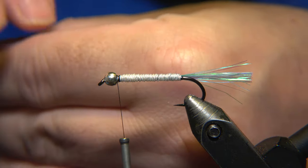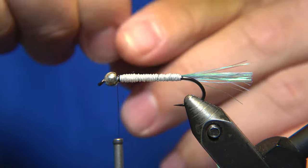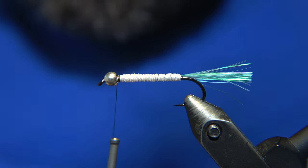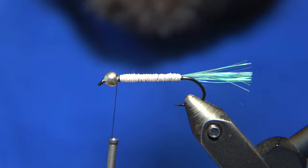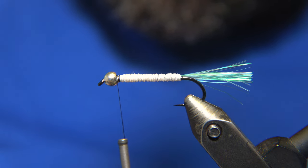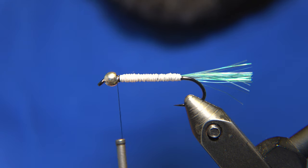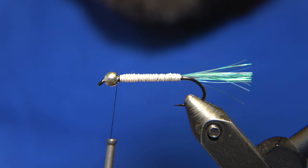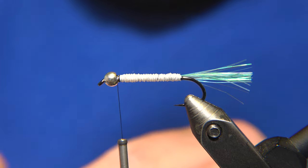For the wing, we'll use the same flashabou material as I used for the tail of the fly. This is a very simple pattern. Often that is the best thing, to keep things as simple as possible.